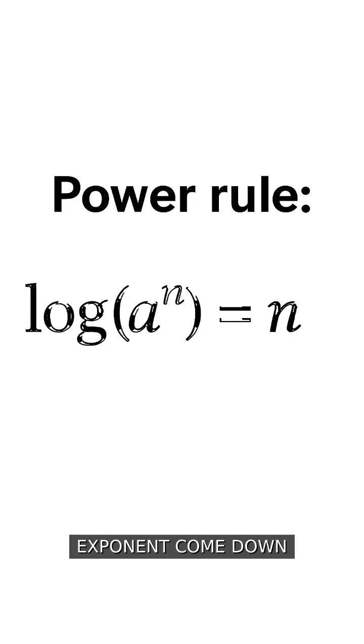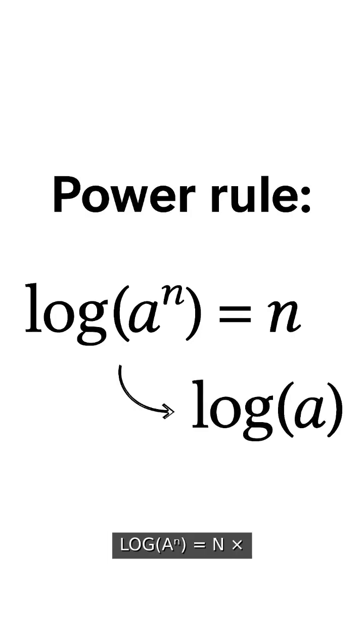Power rule: log of a power lets the exponent come down in front. Log of a to the nth power equals n times log a.